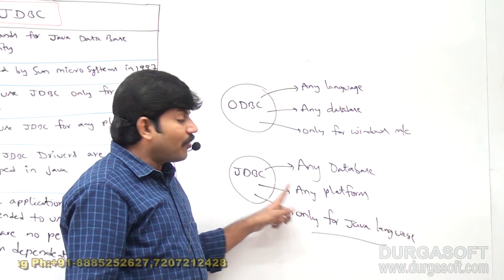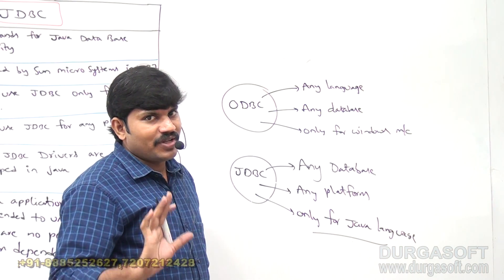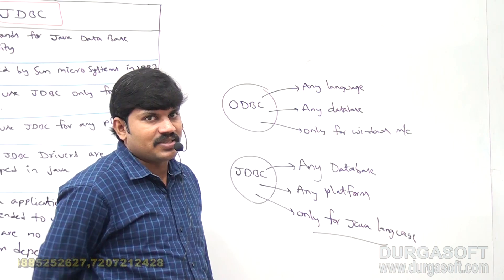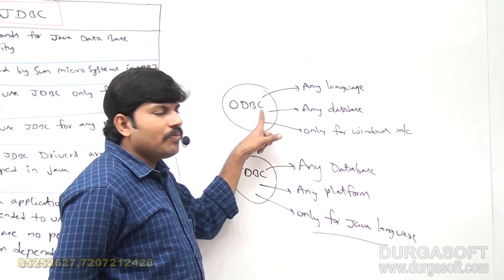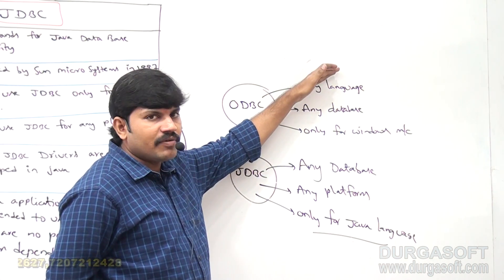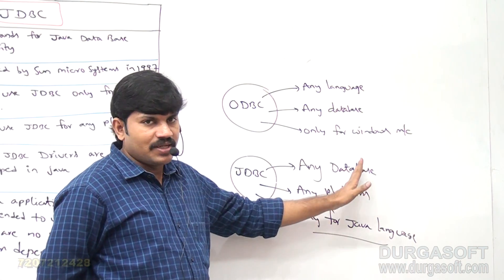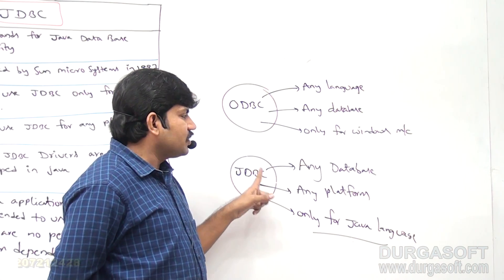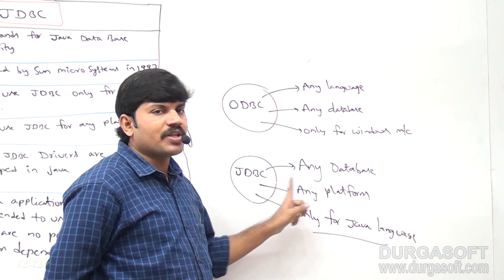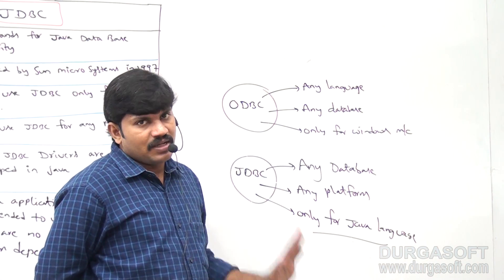Sun Microsystems required to promote their language — that is why JDBC is only for Java. So: ODBC is applicable for any language, for any database, but only for Windows machines. JDBC is applicable for any database, for any platform, but only for Java language.